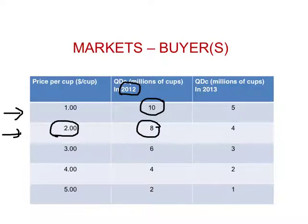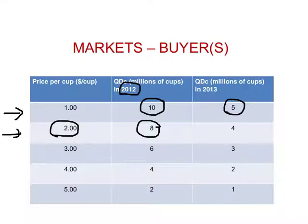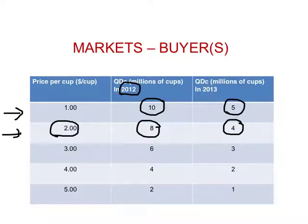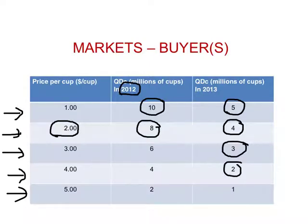Now in 2013, what we find is, though the price has stayed the same, people demand only 5 million cups of coffee instead of 10 million in 2012. When the price is $2 per cup, consumers demand 4 million cups instead of 8 million in 2012. The same phenomenon we observe at other prices — people are now buying fewer cups of coffee at every given price.